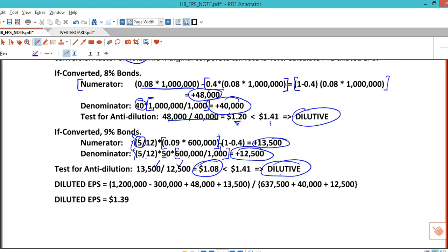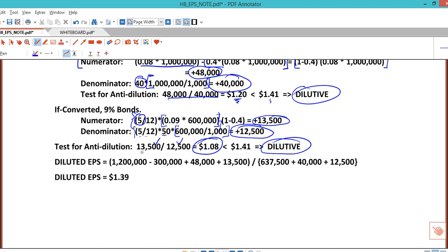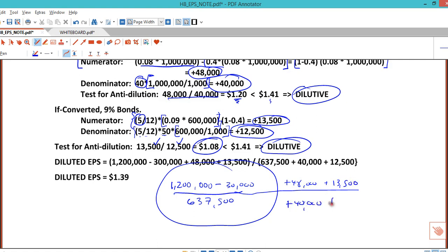The eight percent bond is also dilutive. Now putting it all together: if you look at it this way instead of in a line, this thing here is basic EPS, right? We did that before, and you're always going to start with that for diluted. Then what we're going to do is add the 48,000, add the 13,500, add the 40,000, and add the 12,500. Put it all together, you get a dollar 39. So this company would report basic EPS a dollar 41 and diluted EPS a dollar 39.